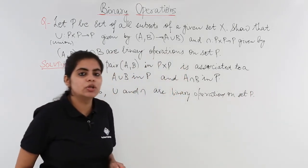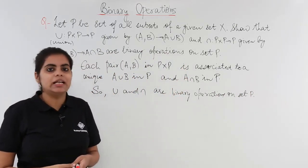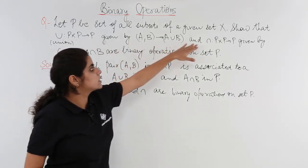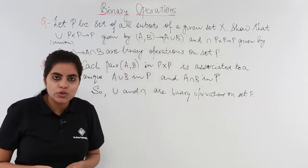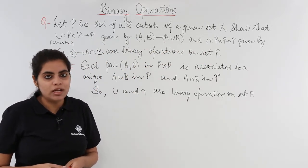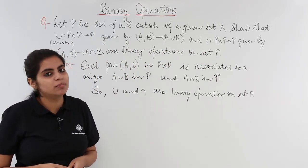So in this video we were asked to prove that union and intersection operations, which are written here - this is union, this is intersection - are closed on a set. In the next video we will see some more details on the types and laws regarding binary operations.